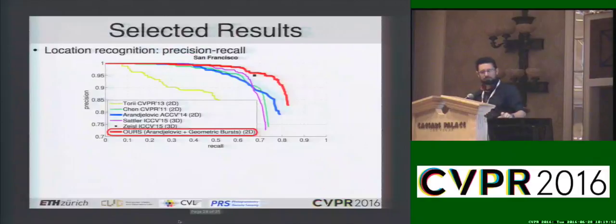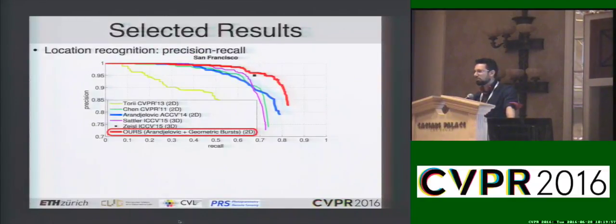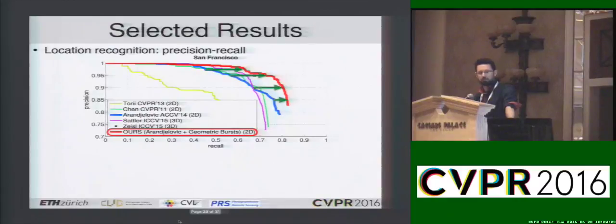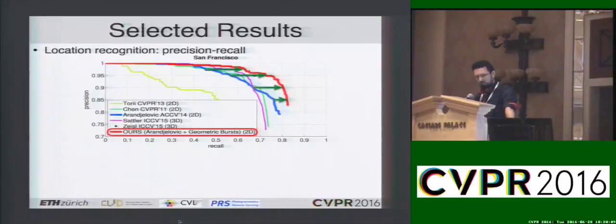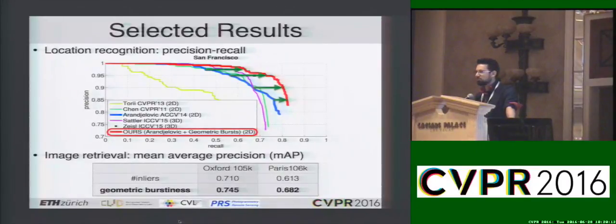Let's look at some results. For the location recognition task, we start with the method corresponding to the blue curve as our baseline, add the handling of geometric bursts, and obtain the red curve — achieving state-of-the-art results just by replacing this tiny part of the pipeline. We also applied the handling of geometric bursts to an image retrieval task, where we again see a nice improvement in results.